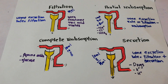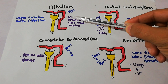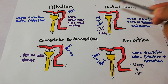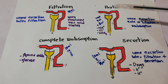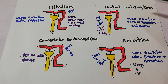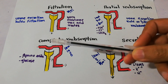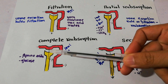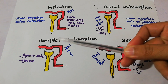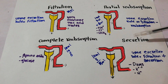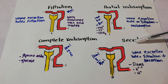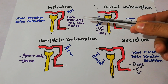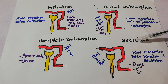In this lecture we are going to discuss examples of substances which depend only on filtration, substances which depend on filtration as well as partial reabsorption, substances which depend on filtration and complete reabsorption, and substances which depend on filtration plus secretion.